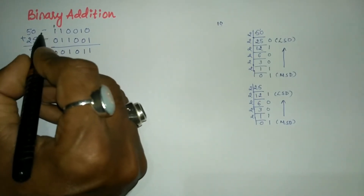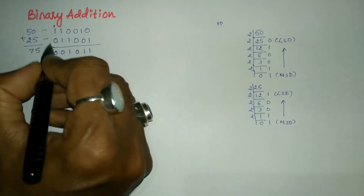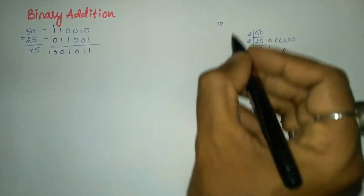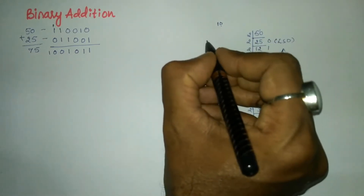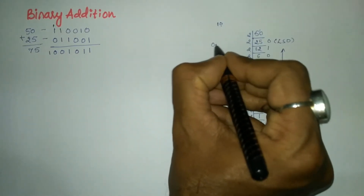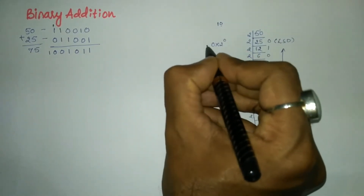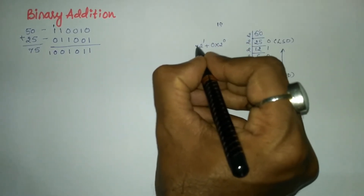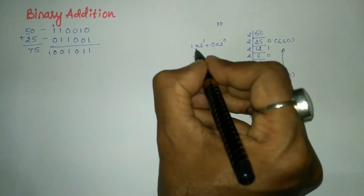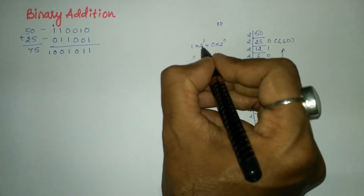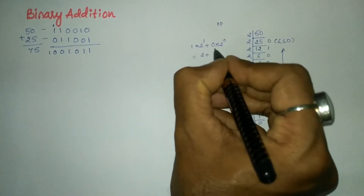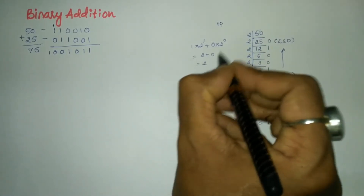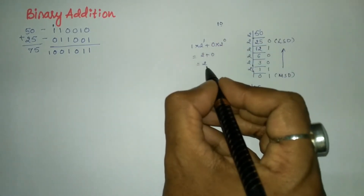I write 1 0 for that column. Then 1 plus 1 is again 2, so I write 1 0 once more since there are no more columns to the left. To confirm that 1 0 equals 2: the positional weight of 0 is 2 to the power 0, and the positional weight of 1 is 2 to the power 1, giving 2 times 1 equals 2, plus 0, equals 2. Hence 1 0 in binary equals 2.